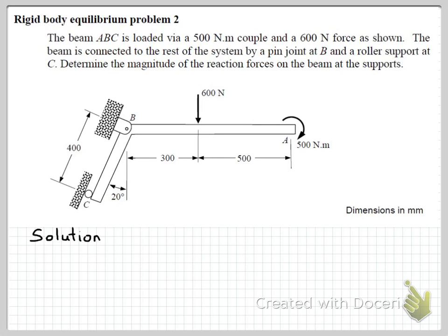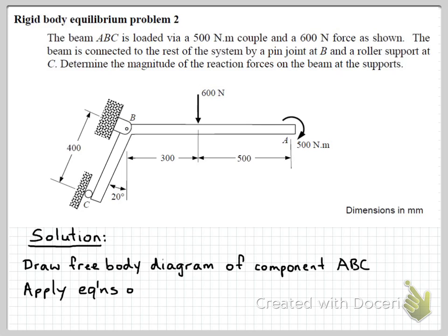So first, let's consider our solution. As with virtually every engineering mechanics problem, the first thing we do is draw a free body diagram of the component that we're trying to analyze. In this case, we're looking at the reaction forces on the component ABC. So we'll draw a free body diagram of that component. Next, this component is in equilibrium, so we'll apply the equations of equilibrium. And then of course, we'll solve those equilibriums for our unknown reactions. Okay, so let's go ahead and draw the free body diagram.